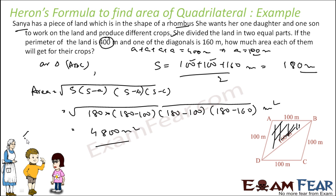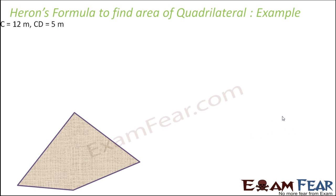She wanted two of her kids to cultivate in these two particular areas, so the land was divided into two equal parts. We had to find the area of each equal part. We saw that each part is a triangle and all the sides were given, so we just applied Heron's formula to find the area.